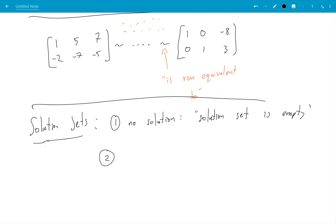Two, if you have a unique solution, so like the one I just talked about, minus 2, minus 7, minus 5, we could say solution set has one element, okay, unique solution.